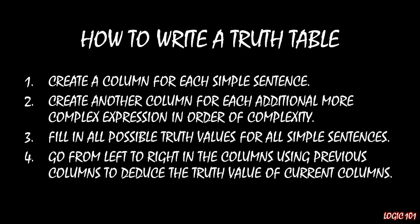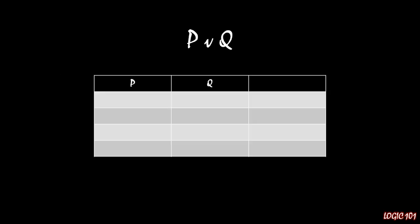So here we're going to look at a very simple example: the sentence P or Q. This is as simple as it gets — just a disjunction, nothing more, nothing fancy. The first step is to write a column for each simple sentence. Here we have P and Q, so we write two columns. The next step is to create additional columns for every more complex sentence in order of complexity. Here there's only one more complicated expression, which is the disjunction P or Q, so we fill in that third column.